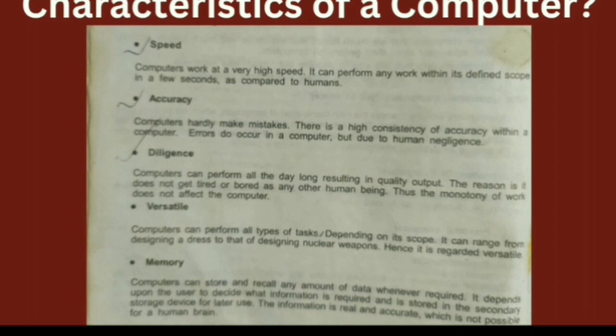Characteristics of a computer. The main characteristics of a computer are: number one, speed; number two, accuracy; number three, diligence; number four, versatility; and number five, memory. These are some characteristics of a computer.